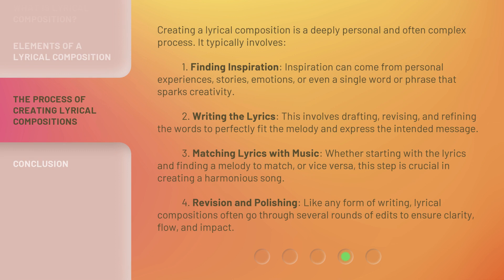Creating a lyrical composition is a deeply personal and often complex process. It typically involves: 1. Finding inspiration — which can come from personal experiences, stories, emotions, or even a single word or phrase that sparks creativity. 2. Writing the lyrics — drafting, revising, and refining the words to perfectly fit the melody and express the intended message. 3. Matching lyrics with music — whether starting with the lyrics and finding a melody to match, or vice versa, this step is crucial in creating a harmonious song.